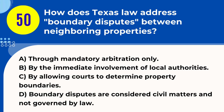Question 50. How does Texas law address boundary disputes between neighboring properties? A. Through mandatory arbitration only. B. By the immediate involvement of local authorities. C. By allowing courts to determine property boundaries. D. Boundary disputes are considered civil matters and not governed by law. Answer: C. By allowing courts to determine property boundaries. Explanation: In Texas, boundary disputes between neighboring properties are often resolved in court, where a judge can determine the legal property boundaries based on evidence.